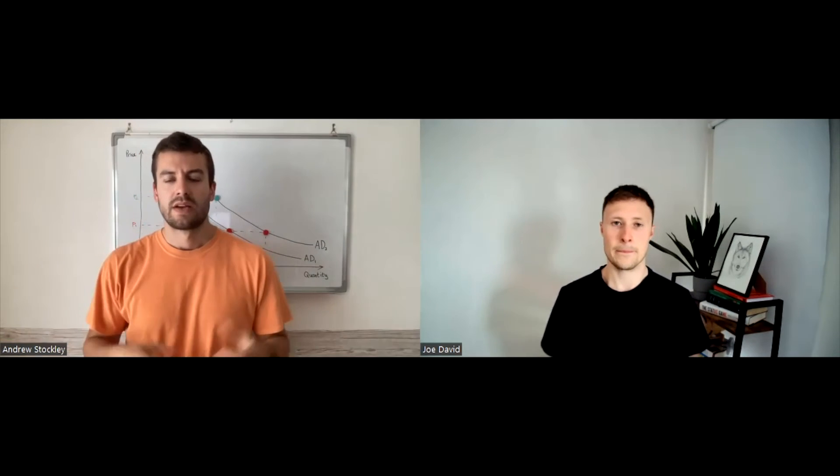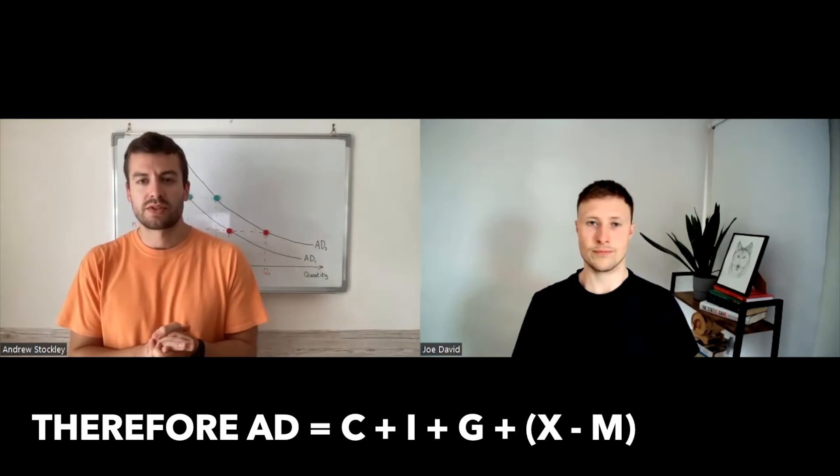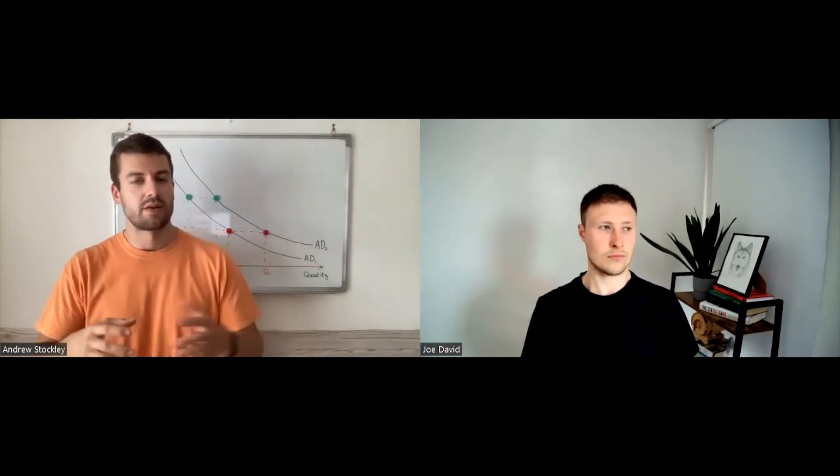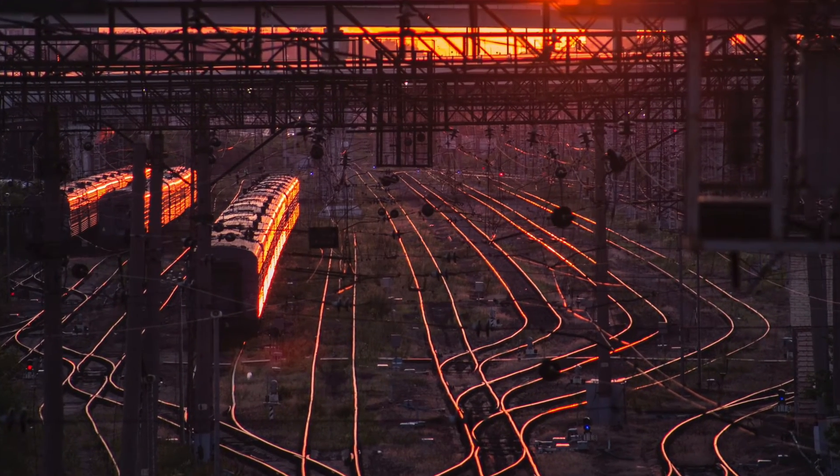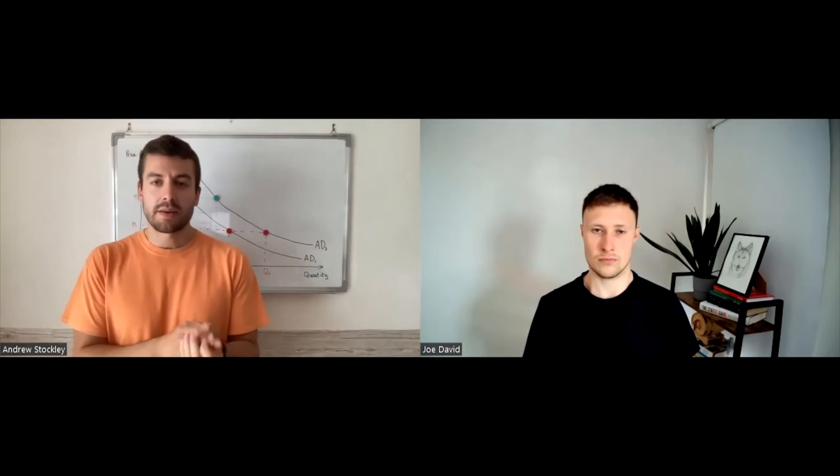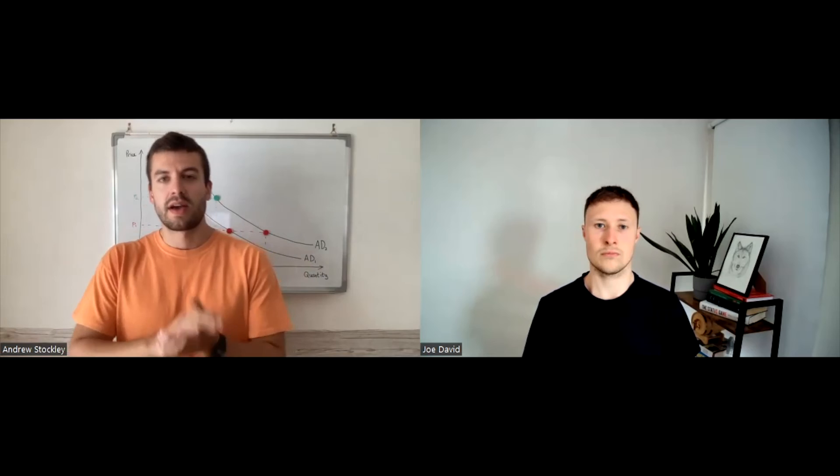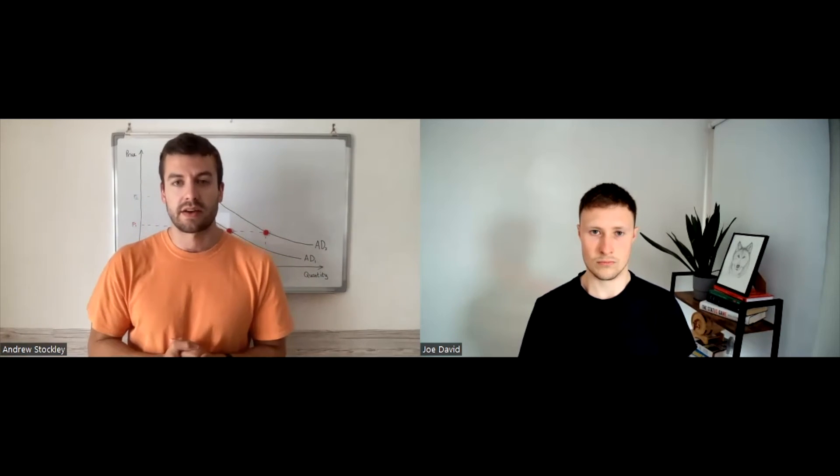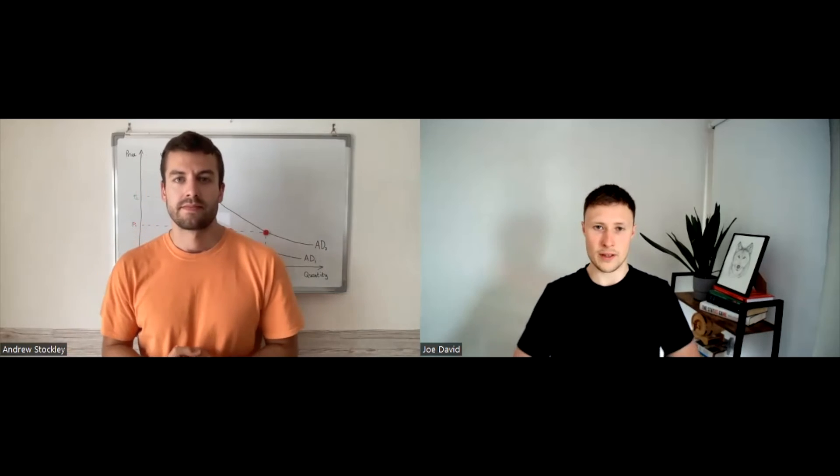So just to take you through a few examples, if the government announced a new infrastructure project where it was going to repair all the roads and all the railways, this would increase the G component of the AD equation and cause a rightward shift in the aggregate demand curve. All other things remaining equal.